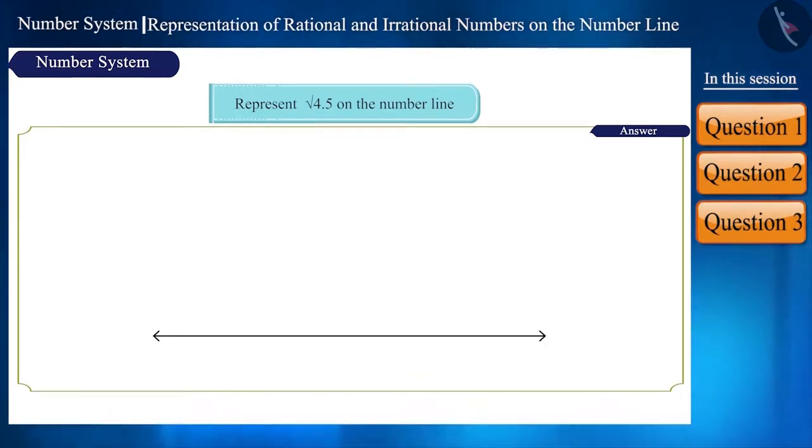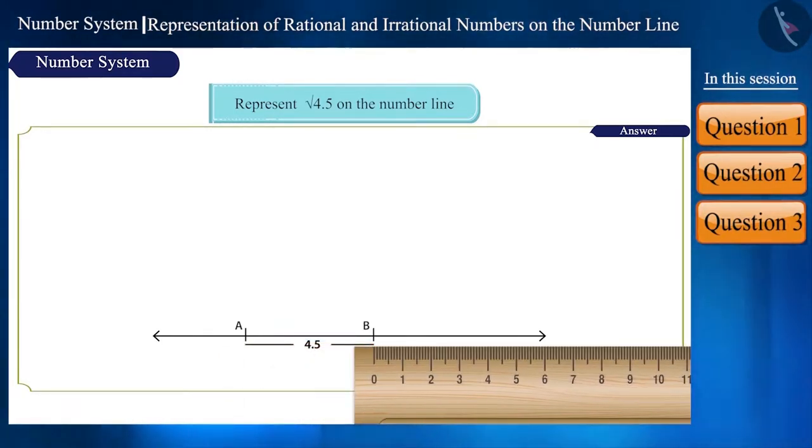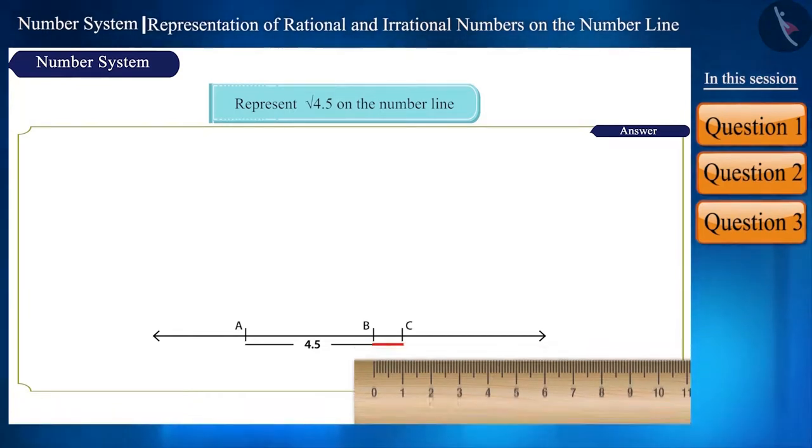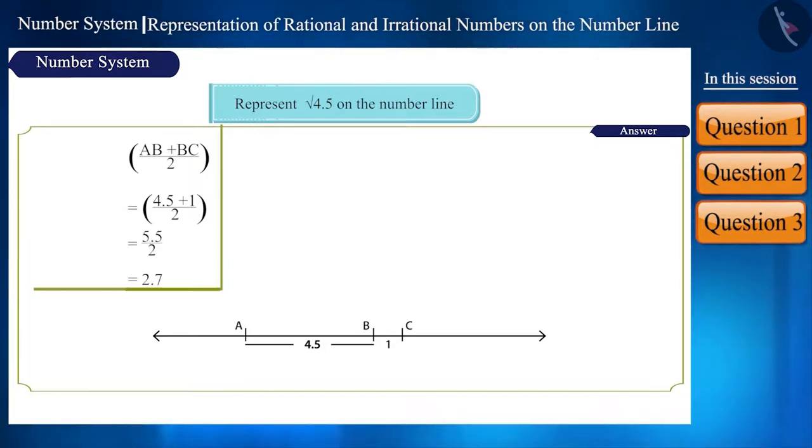On a line, take point A and B such that the distance between points A and B is 4.5 units. Now, from point B at a distance of 1 unit, mark a point C on the number line. Now find the midpoint of line AC which will be AB plus BC divided by 2. Here we get O.